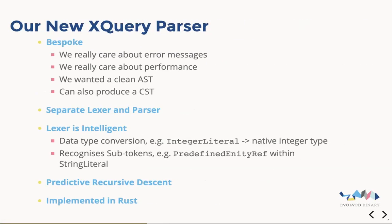So for our new XQuery parser, we decided to implement a bespoke recursive descent parser. We felt we had to do this because our requirements drove us to a bespoke design — we really care about the error messages and we're really interested in performance. One of the other advantages from a bespoke design is that you can completely control the white space handling. As well as producing an abstract syntax tree where unnecessary white space is stripped away, we also have the option to produce a concrete syntax tree where the white space is kept. You can do interesting things with this, like linting and auto-formatting of code.